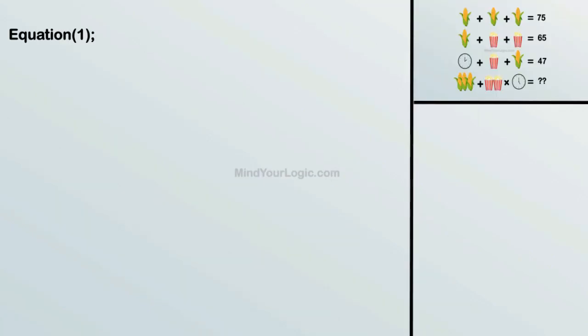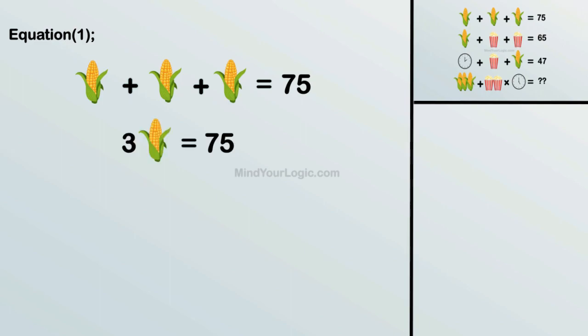Equation 1 is simple. Corn plus corn plus corn equals 75. So, 3 corn equals 75. Corn equals 25.